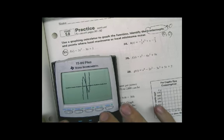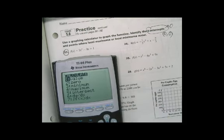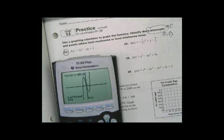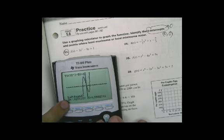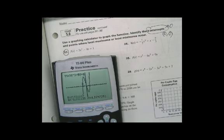We can find the other x-intercepts by saying second, calculate, and we can find the zeros. Oh, we can also find the minimum and the maximum. I'll find a maximum for you. So if I want to find a maximum, we want to find the left bound. Press enter.